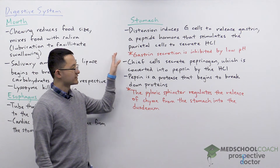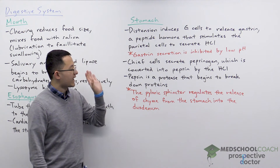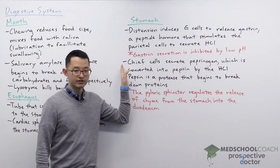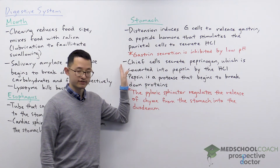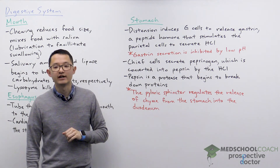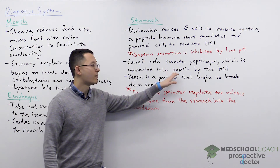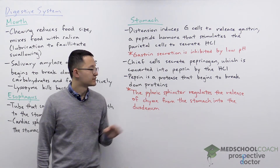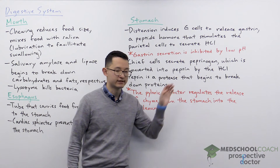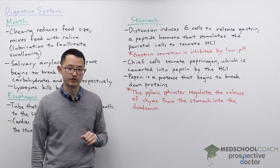The hydrochloric acid is important because it acts on pepsinogen, which is a zymogen secreted by chief cells. Pepsinogen in the presence of HCl is converted into its active form, pepsin. Pepsin is a protease that begins to break down proteins in the stomach for digestion.